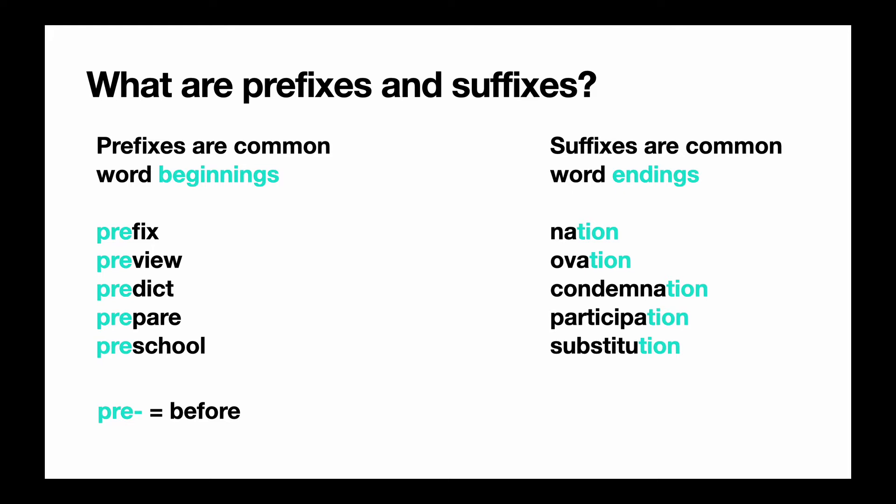And then to look at the suffixes, '-tion' is an ending that shows that something is an action or a process — it's the noun form. So many of these words show actions and processes.